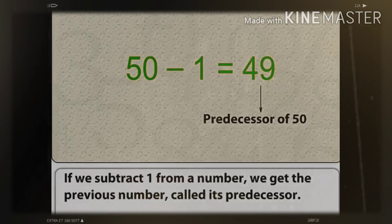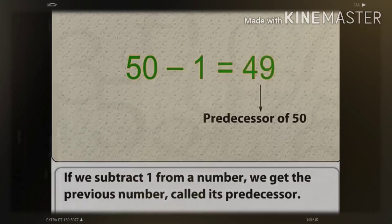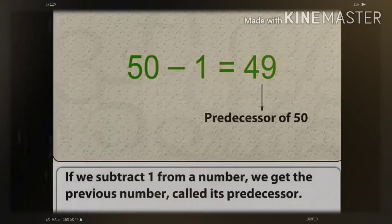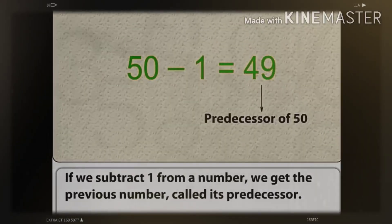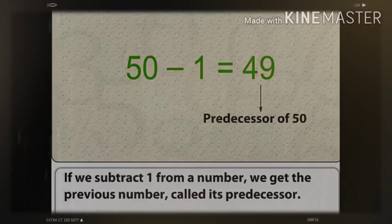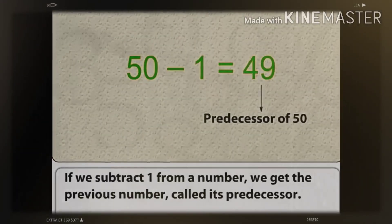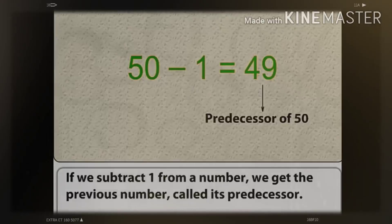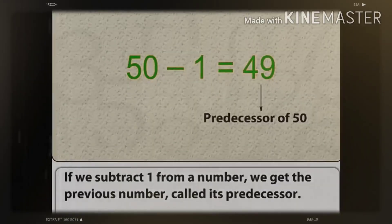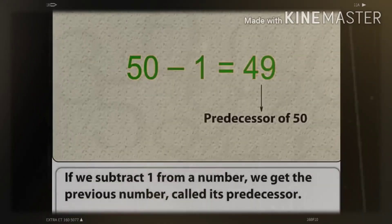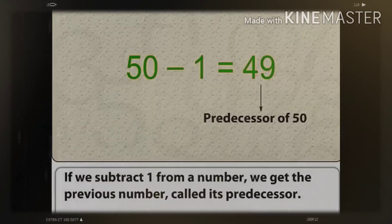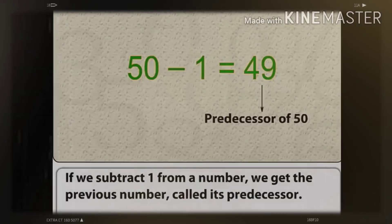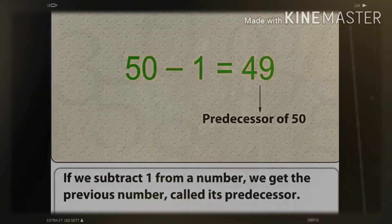Now, can you write the number that comes just before the number 50? We can write it by subtracting one from the number 50. That is, 50 minus one equals 49. So 49 is the predecessor of 50.